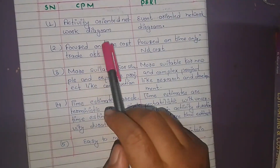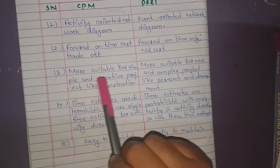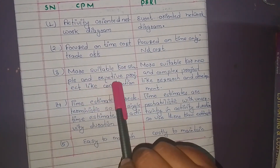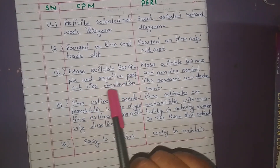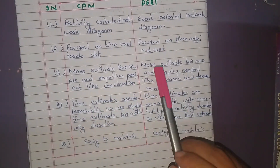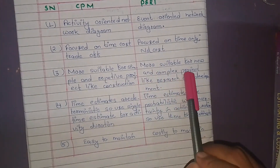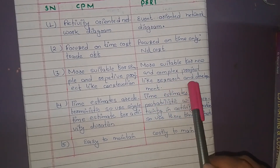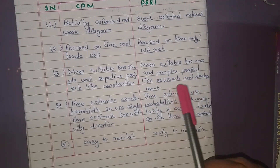CPM is more suitable for Simple and Repetitive Projects like Construction, whereas PERT is more suitable for New and Complex Projects like Research and Development.